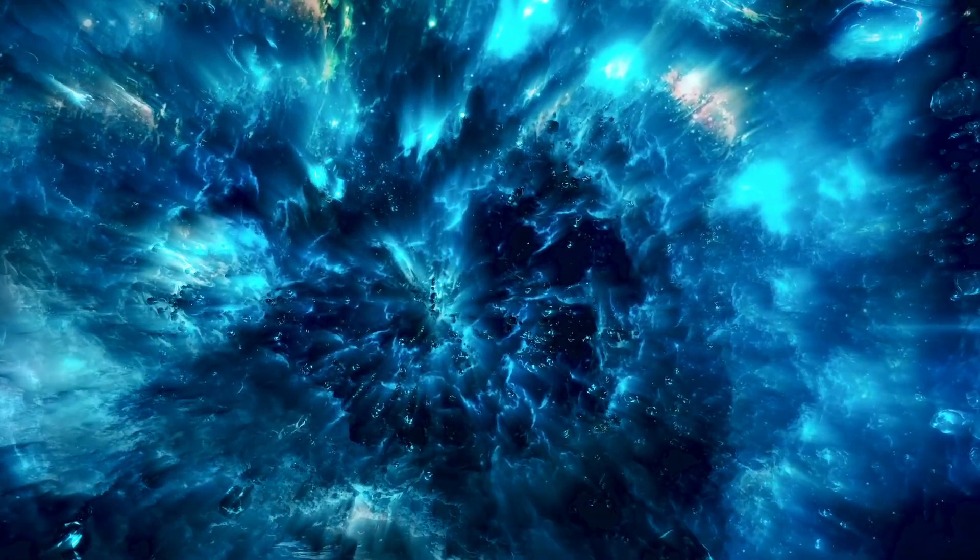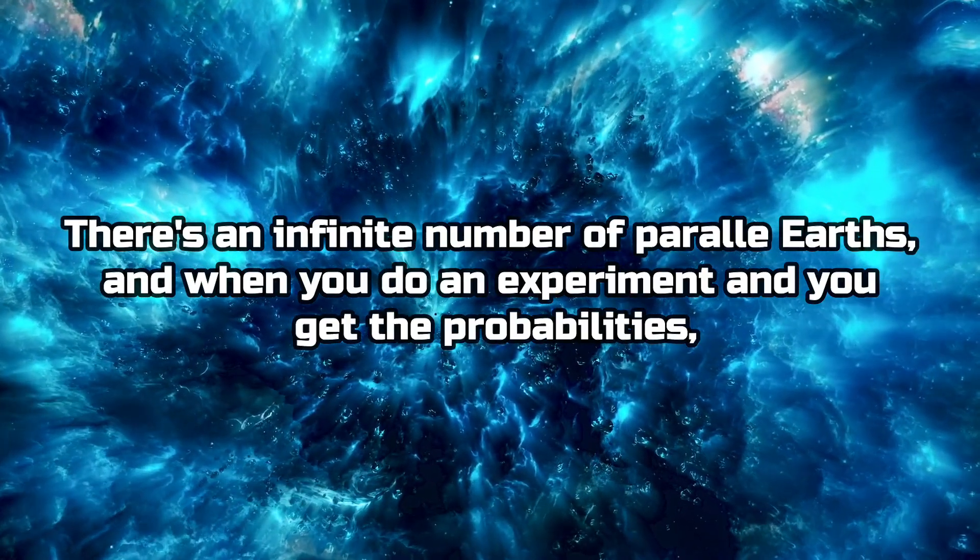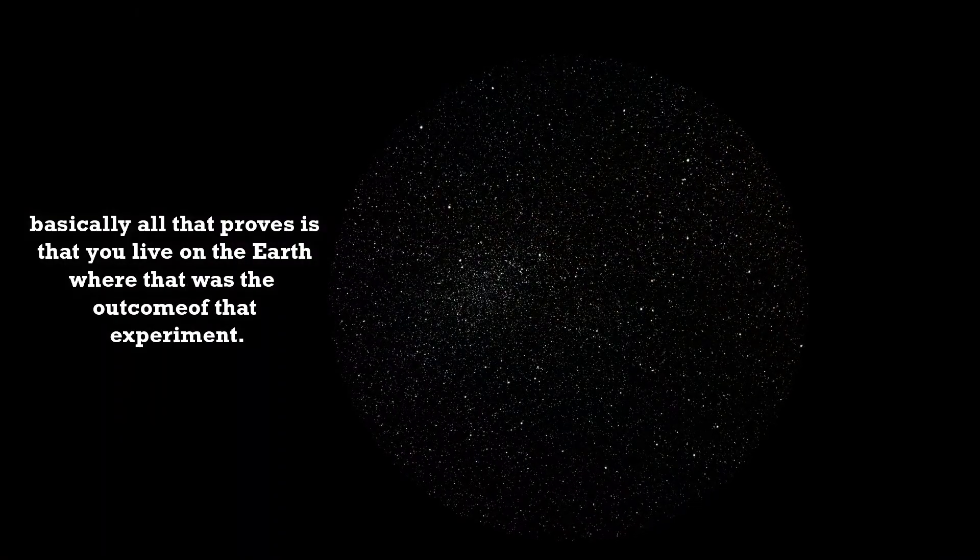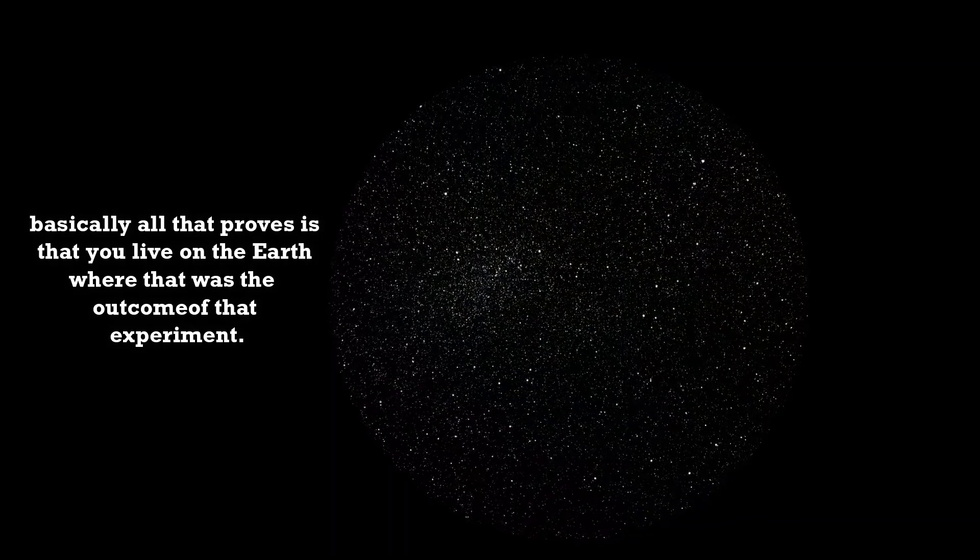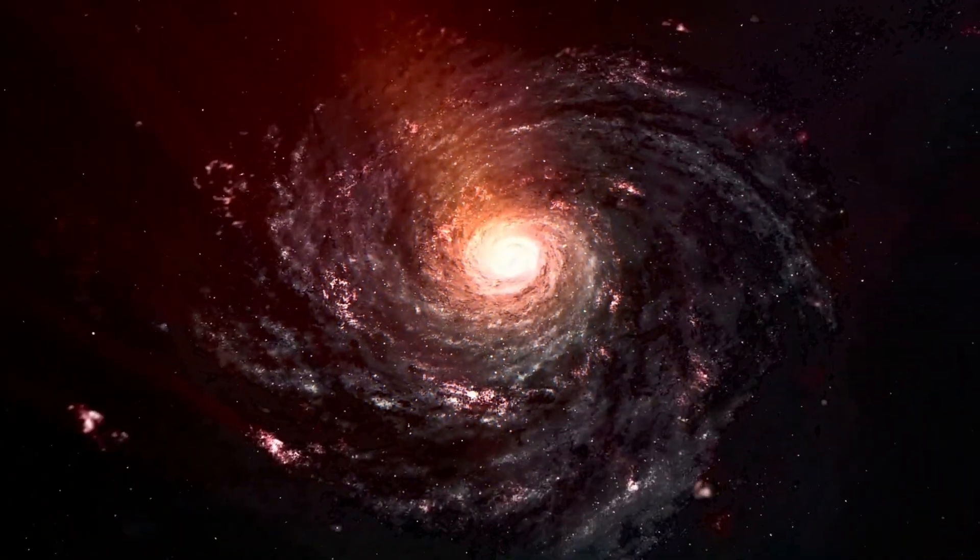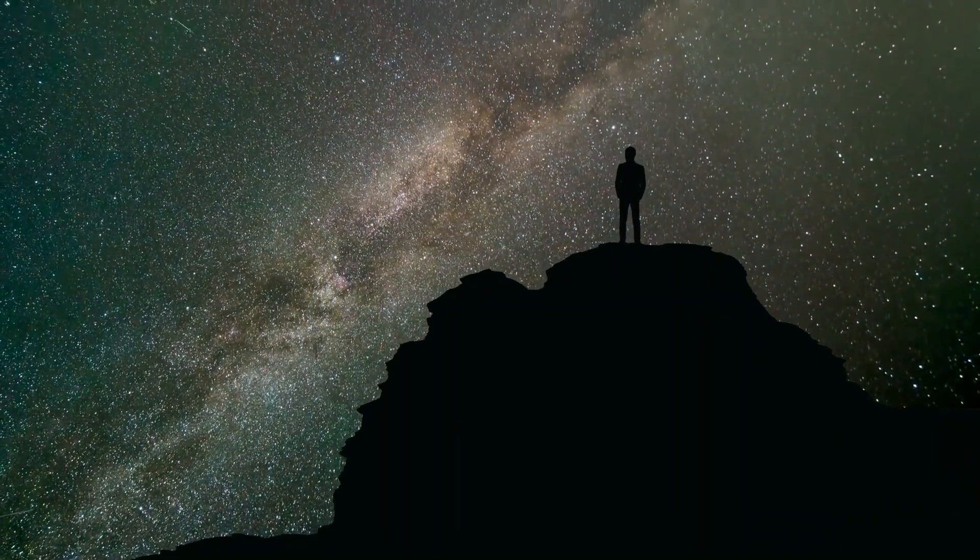This theory states that there's an infinite number of parallel Earths, and when you do an experiment and you get the probabilities, basically all that proves is that you live on the Earth where that was the outcome of that experiment. But on other Earths, there's a different outcome. According to this interpretation, versions of you could be off living the many different possible lives you could have led if you'd made different decisions.